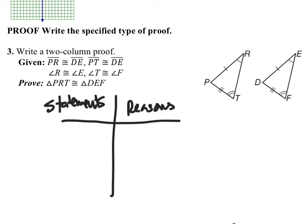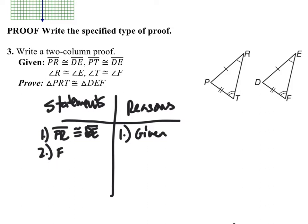The first thing I want to do is list off my given statements. Statement one: PR is congruent to DE, and that's given. The second statement is that PT is congruent to — actually, it should say DF. PT is right here and DF is here, so I'm going to change that and call that DF, and that's given.